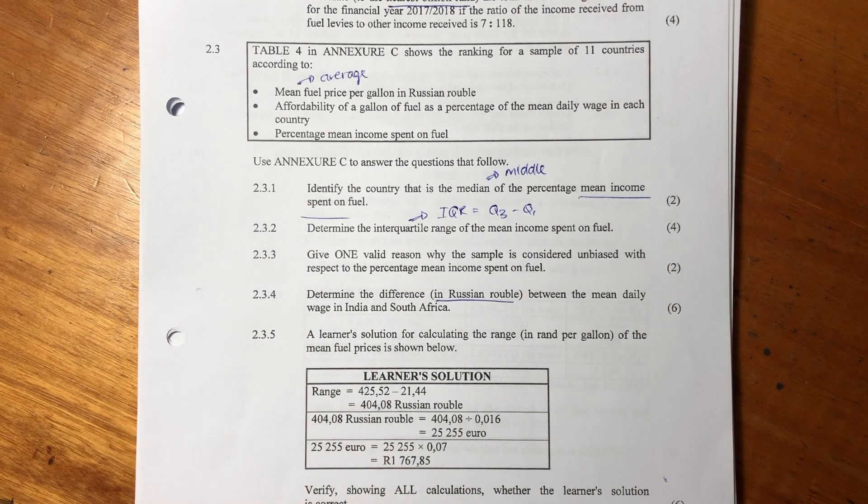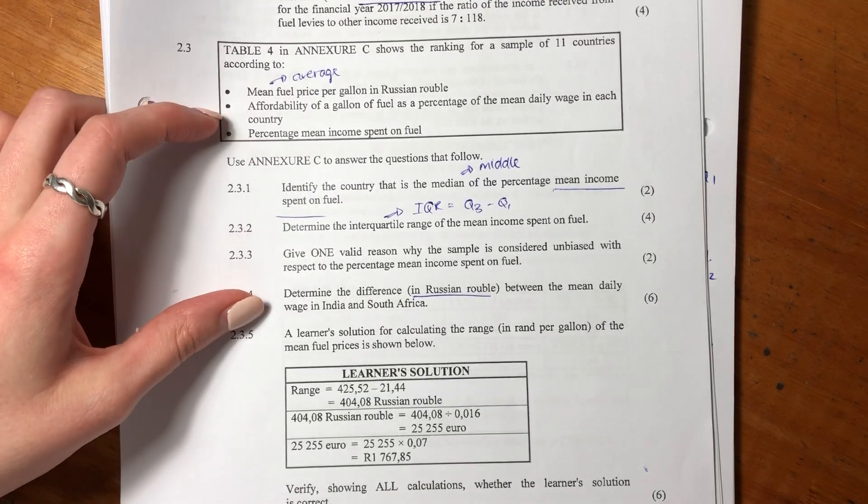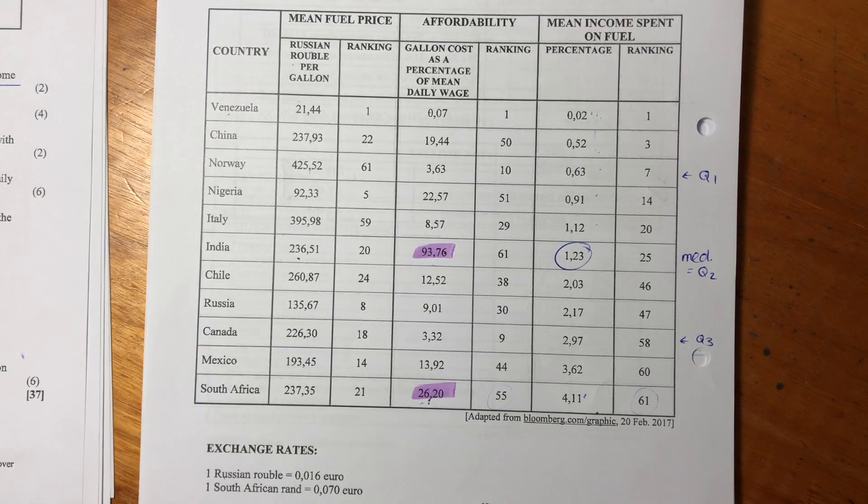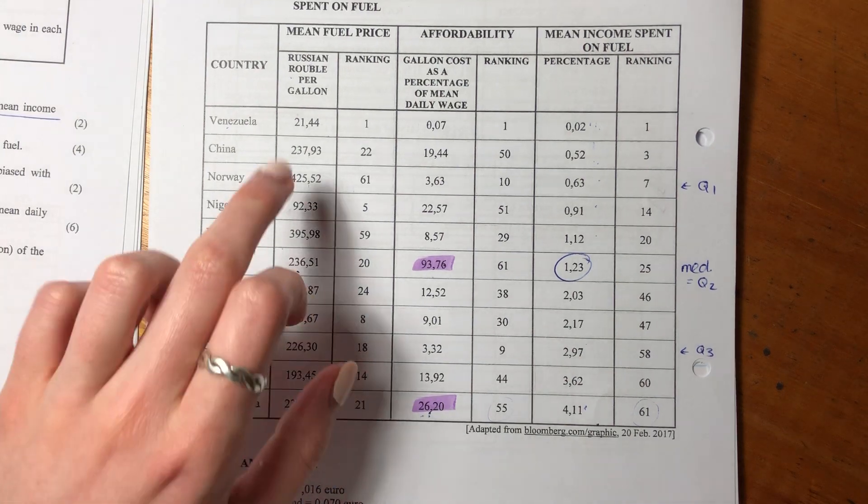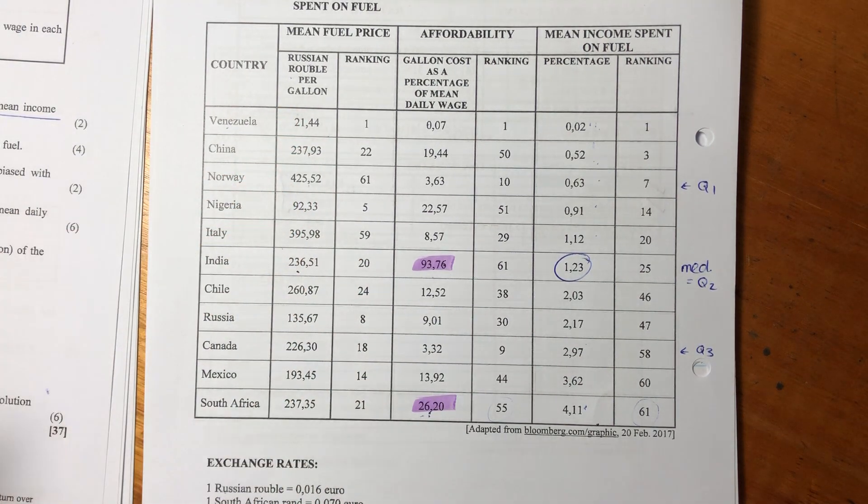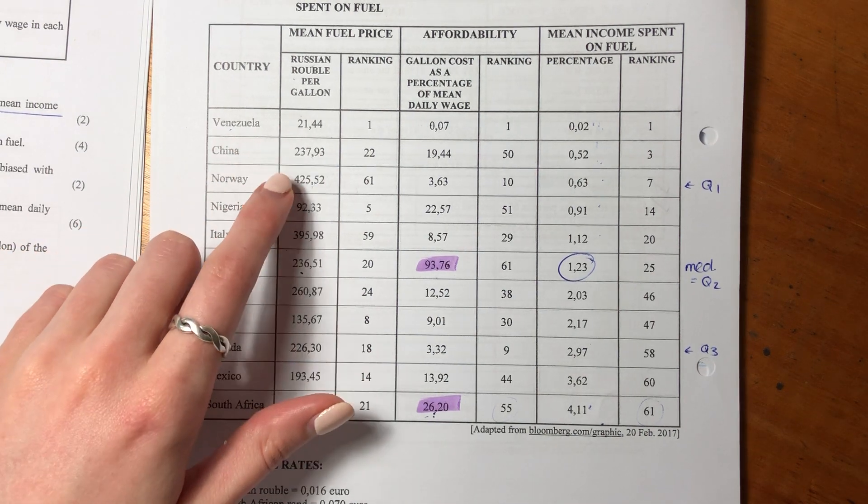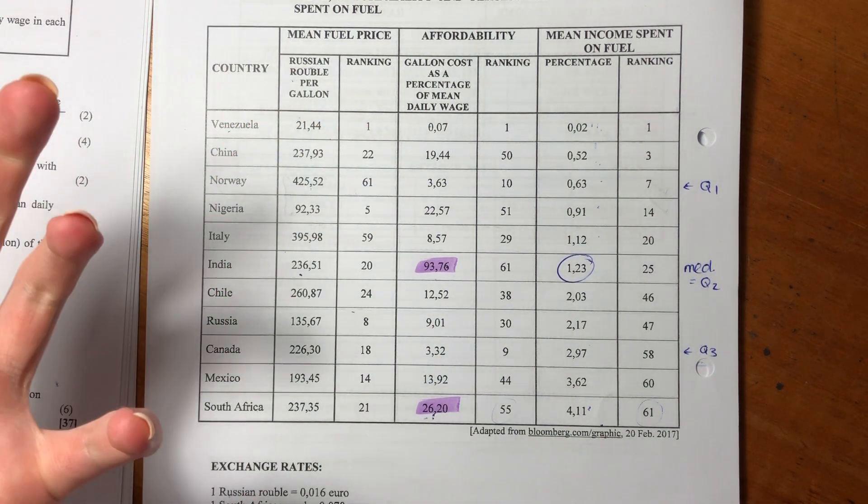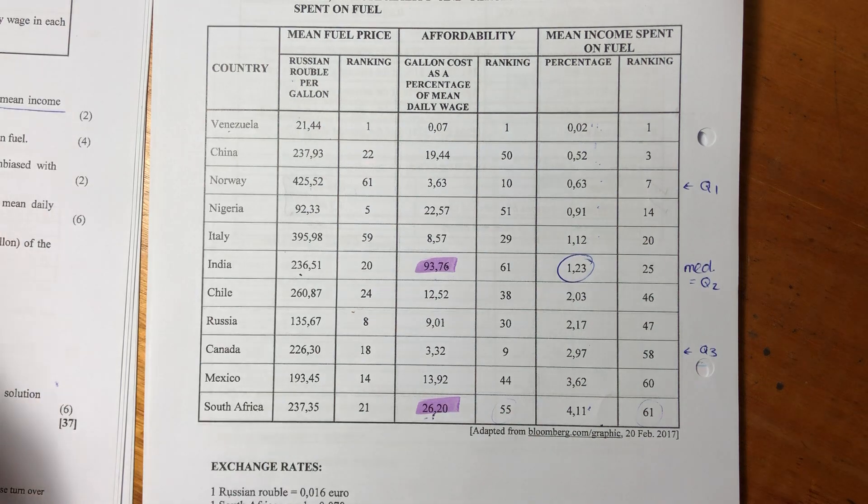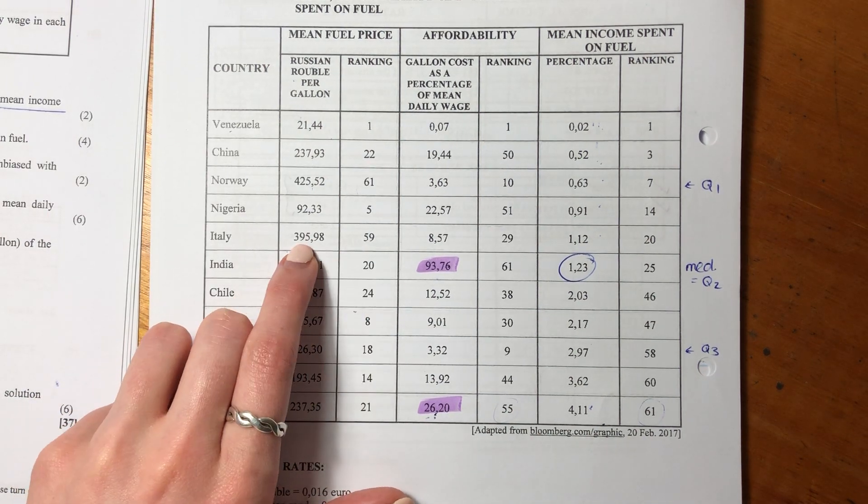It says use Annex C to answer the questions that follow. Let's just quickly look at Annex C because this is a little bit confusing to understand. Annex C shows three things. It shows the mean fuel price, so this is basically saying how much does it cost for a gallon of fuel in each of these countries in Russian ruble. We can see in Venezuela it's cheaper than in China, and all the rankings here are from most affordable, and then as you go lower in the rankings, it's less affordable.